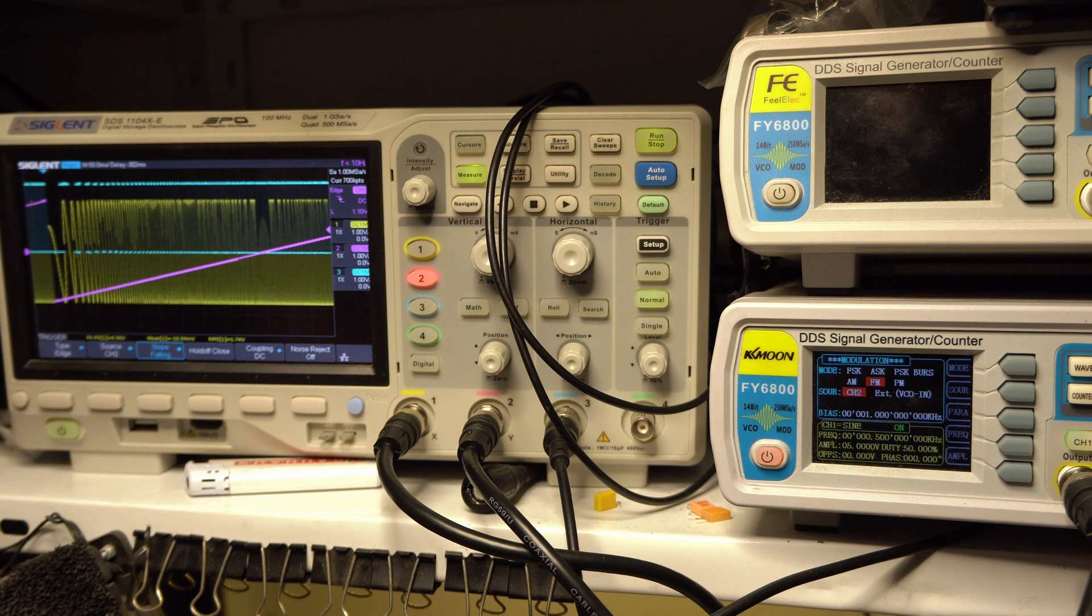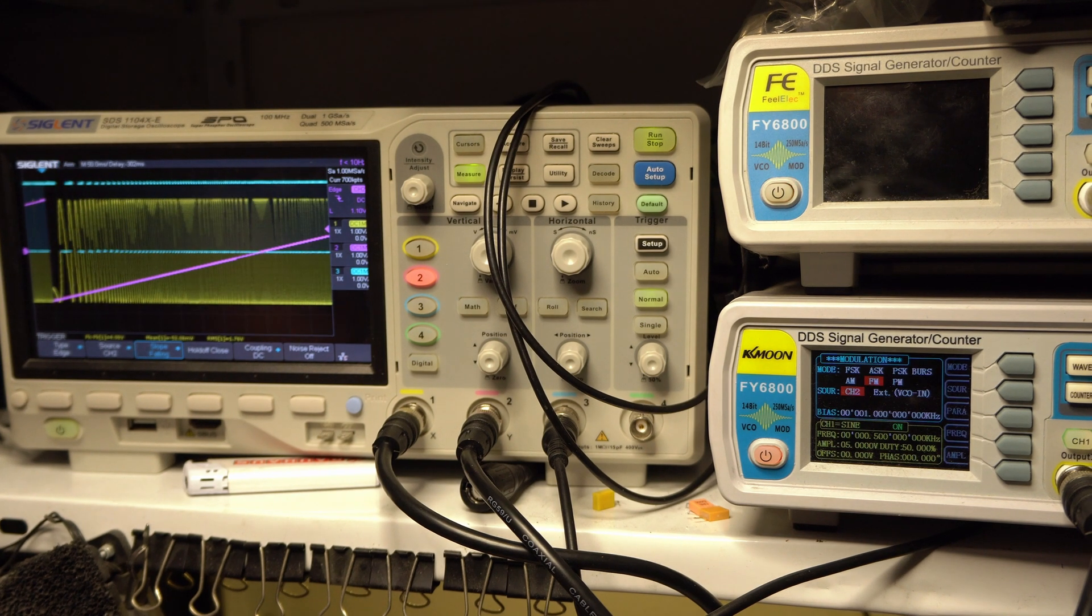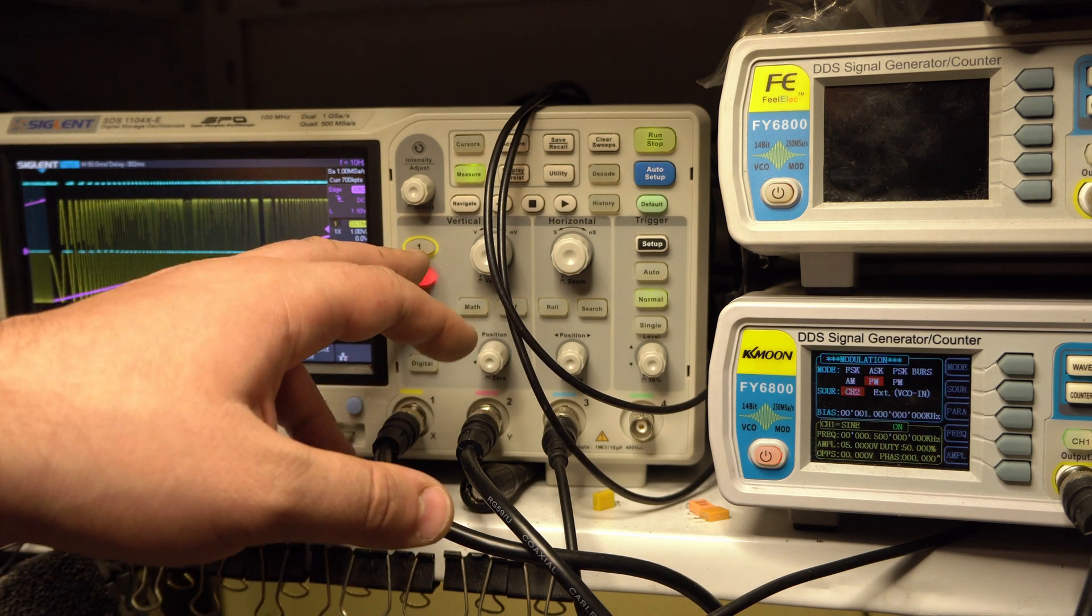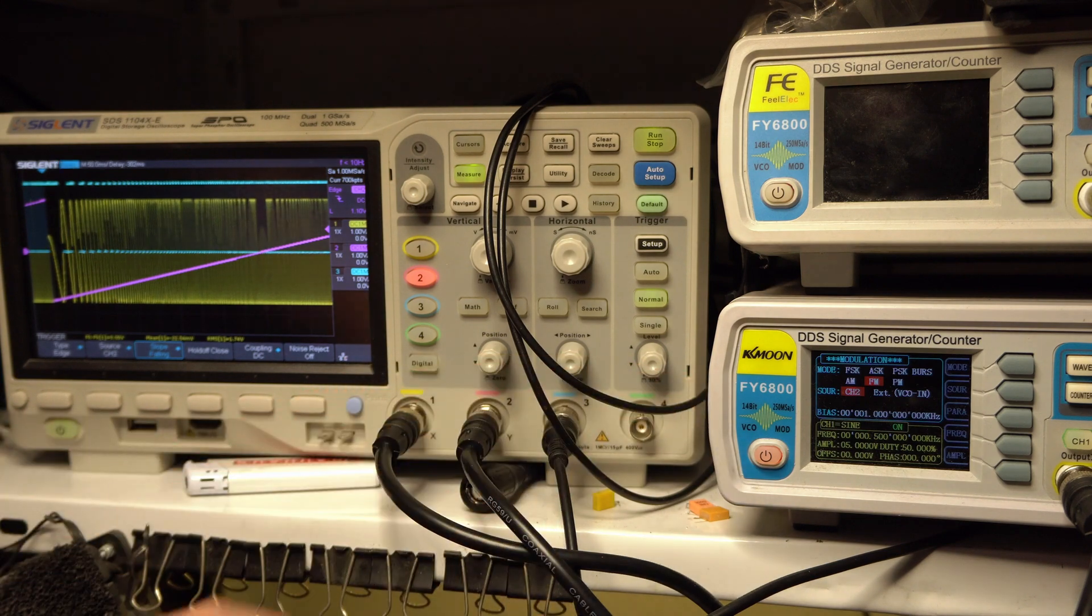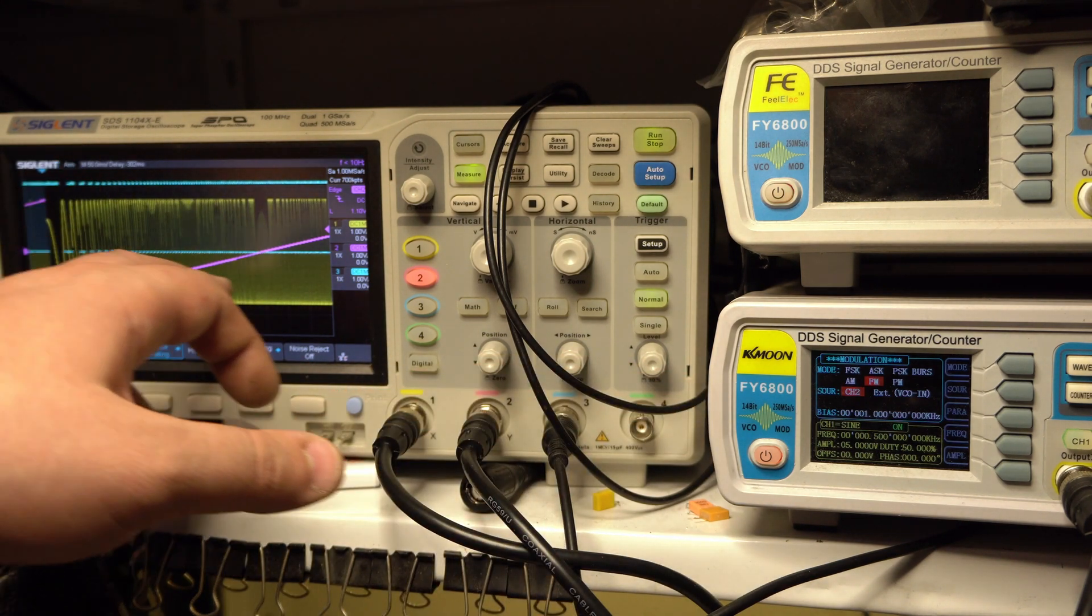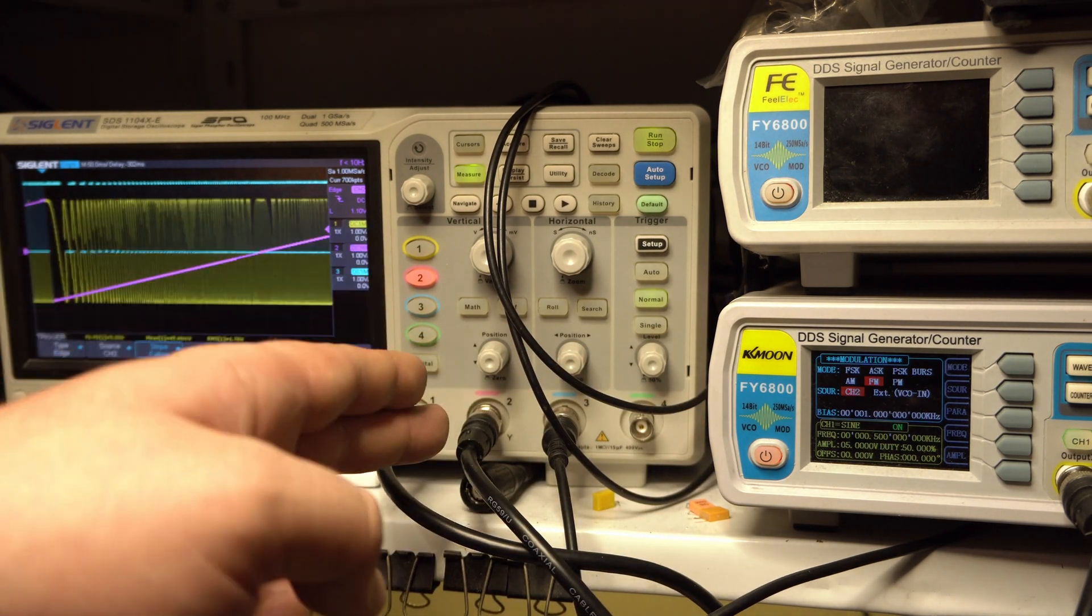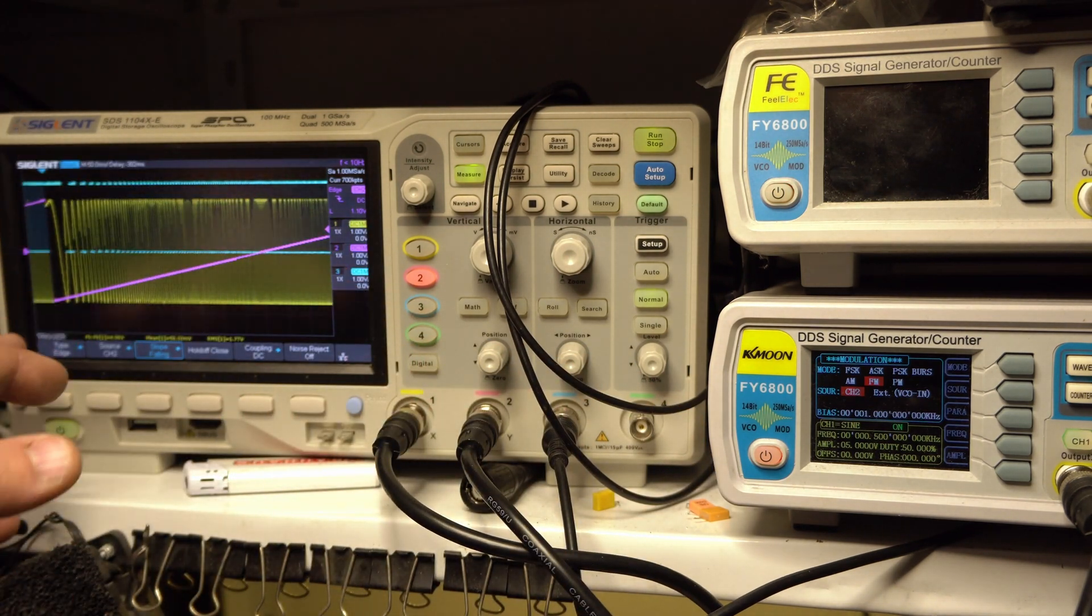Before I forget it, I have enabled three channels. Channel one is channel one of the Feeltech, it's the modulated signal. Channel two is channel two, which the modulated signal is based on, so it's the ramp.